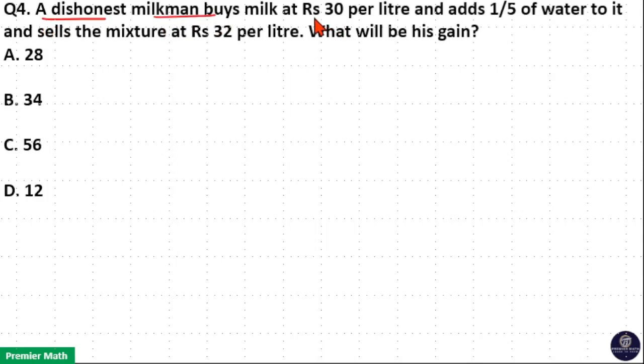A dishonest milkman buys milk at Rs. 30 per litre and adds 1 by 5 of water to it, and sells the mixture at Rs. 32 per litre. What will be his gain?